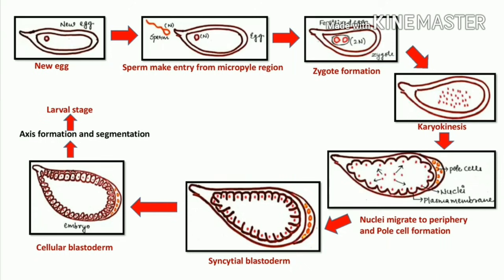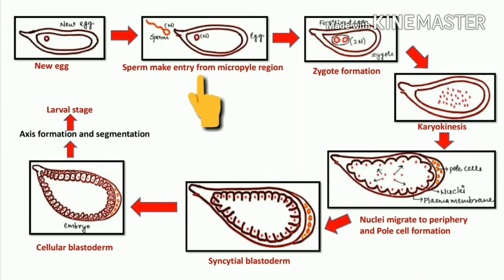This diagram shows all the different developmental processes that occur in Drosophila. We start with the new egg. Initially there is formation of a new egg, then a sperm enters from the micropyle region. The haploid egg cell and the haploid sperm cell meet and form a zygote — this is called the fertilized egg.